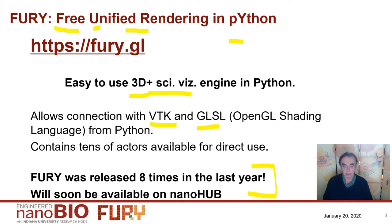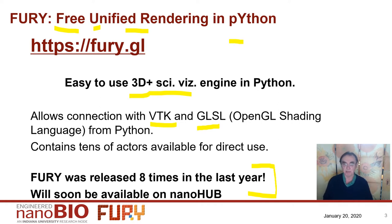The only reason it's not available today on NanoHub is we don't have GPUs. We don't actually need optimized GPUs — they just have to be GPUs — so we can do visualization in an effective fashion.